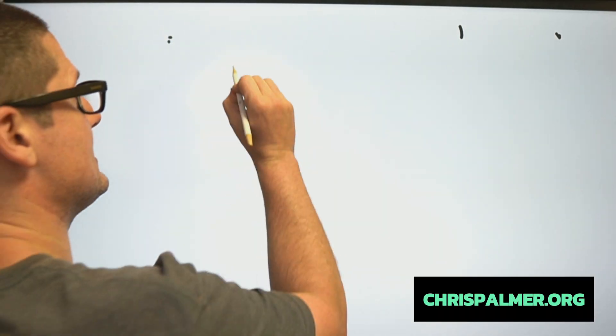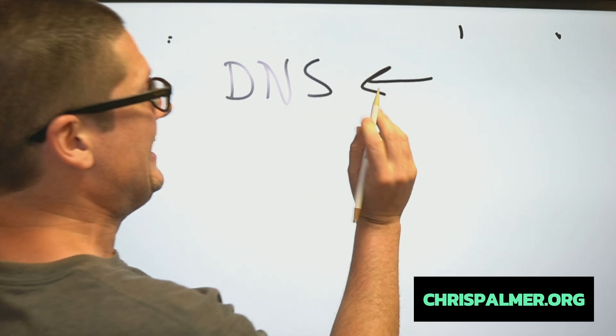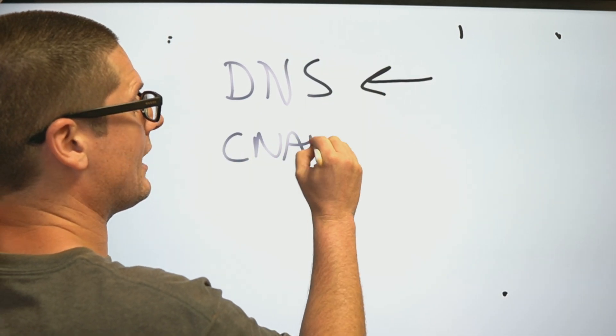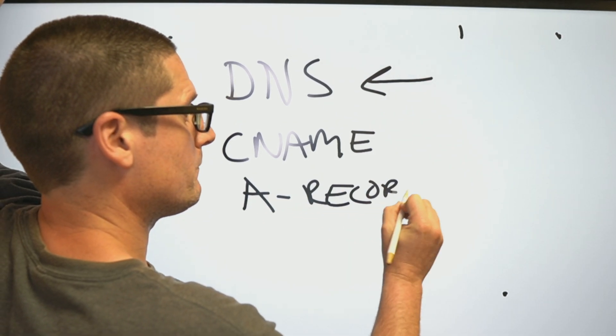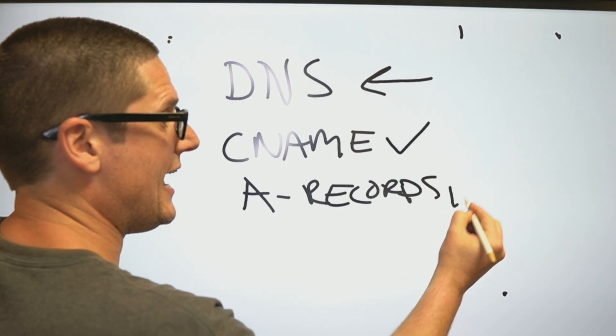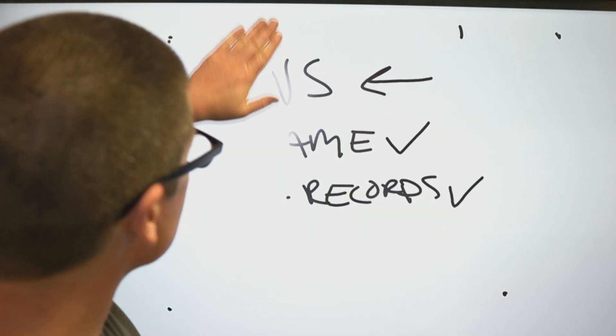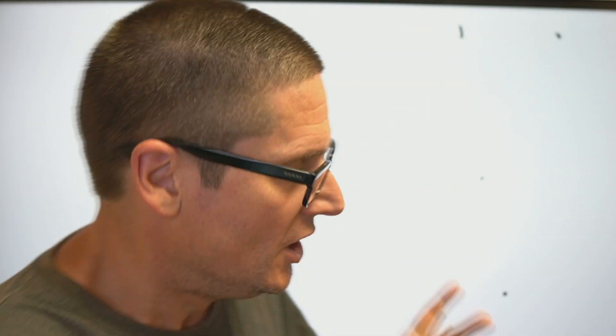First and foremost, I want you to know about DNS. You're probably already familiar with DNS. DNS sets things like your CNAME records and also your A records. Along with your DNS changing, either CNAME or A records, this is also where you're going to put in and change A records.